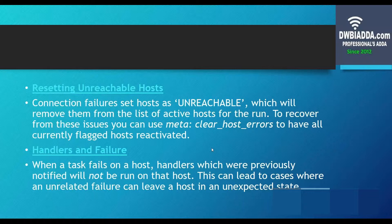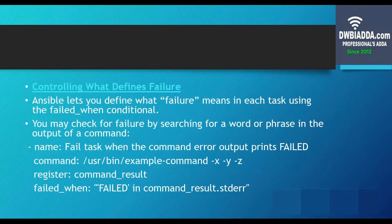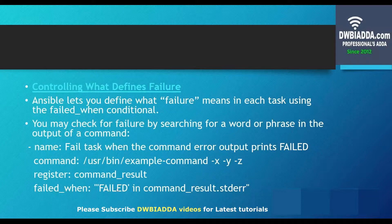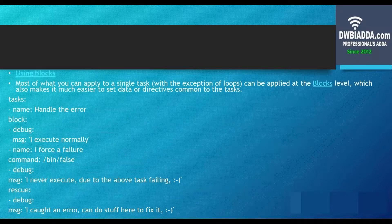Ansible also lets us define what constitutes a failure from our end. If there are some conditions which we want to treat as a failure, we can write commands for that. Here is an example: we name the task to fail when the command error output prints 'failed', define the command working in that task, and define a register which stores the result of the command. We then specify the failure configuration using failed_when, so that failure is only defined as per the given parameter in this setting.